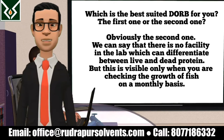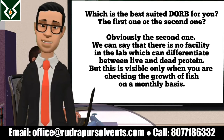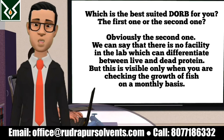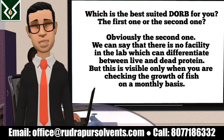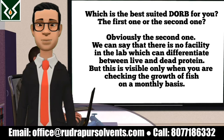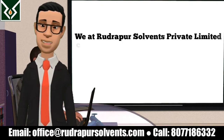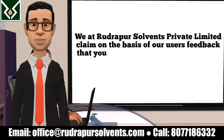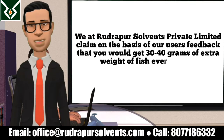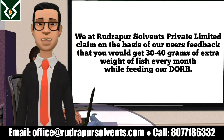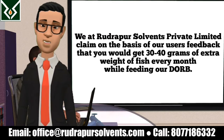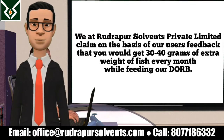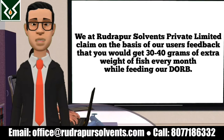We can say that there is no facility in the lab which can differentiate between live and dead protein. But this is visible only when you are checking the growth of fish on a monthly basis. We at Rudrapur Solvents Private Limited claim, on the basis of our users' feedback, that you would get 30 to 40 grams of extra weight of fish every month while feeding our DORB.